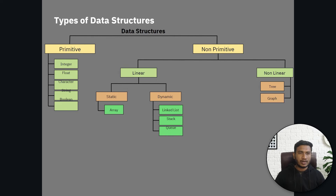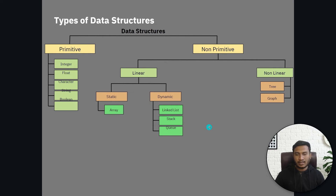Non-primitive data structure can be of various types. Non-primitive data structure is of two types: one is linear and the other is non-linear. In linear, we have static and dynamic. In static we have array, and in dynamic we have linked list, stack, and queue. I'll be discussing these data structures in detail — we have dedicated sessions on each. Just try to remember that non-primitive data structure is a complex data structure.